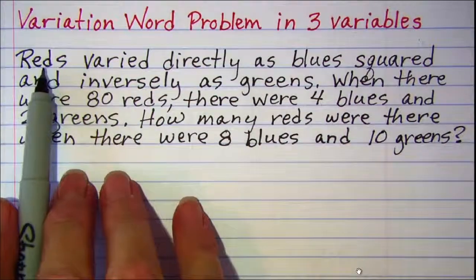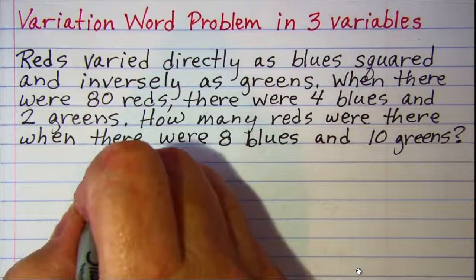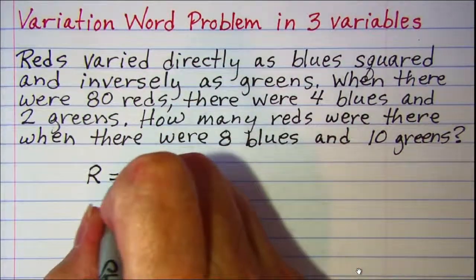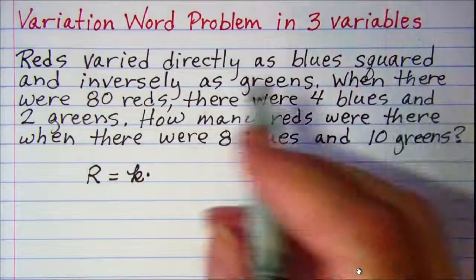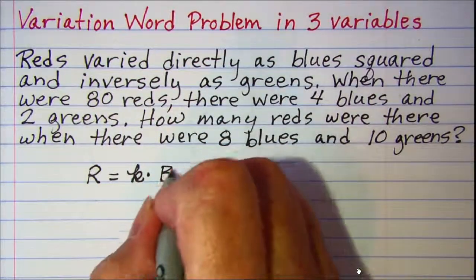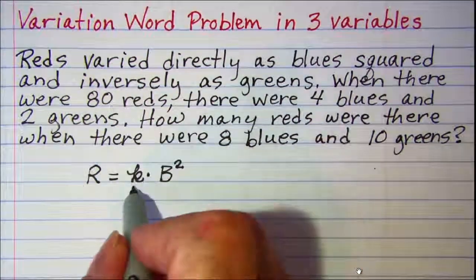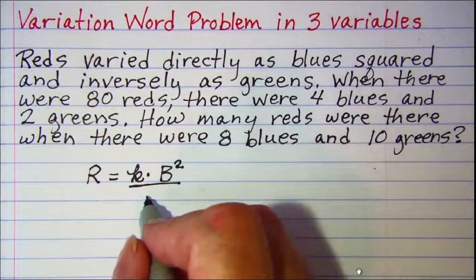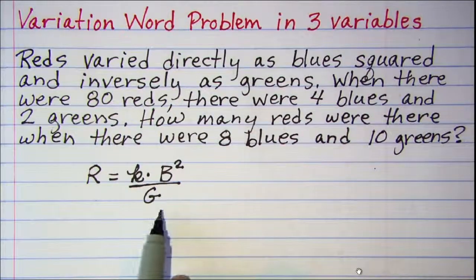So let's translate here. We have reds so I'll write R. Vary directly so equals our constant K times blue squared, so blues squared. And inversely so now divided by greens. So this is the equation that I'm going to work with.